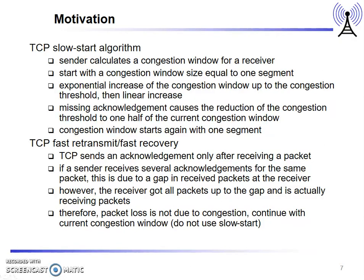In wireless networks, we cannot use standard TCP, so we use variants of TCP. In the slow start algorithm, unlike standard TCP which fixes a maximum congestion window size, we start with a small size and gradually increase it exponentially. A missing acknowledgement causes reduction of the congestion threshold to one half of the current congestion window. If congestion occurs again, the congestion window starts back at one segment.